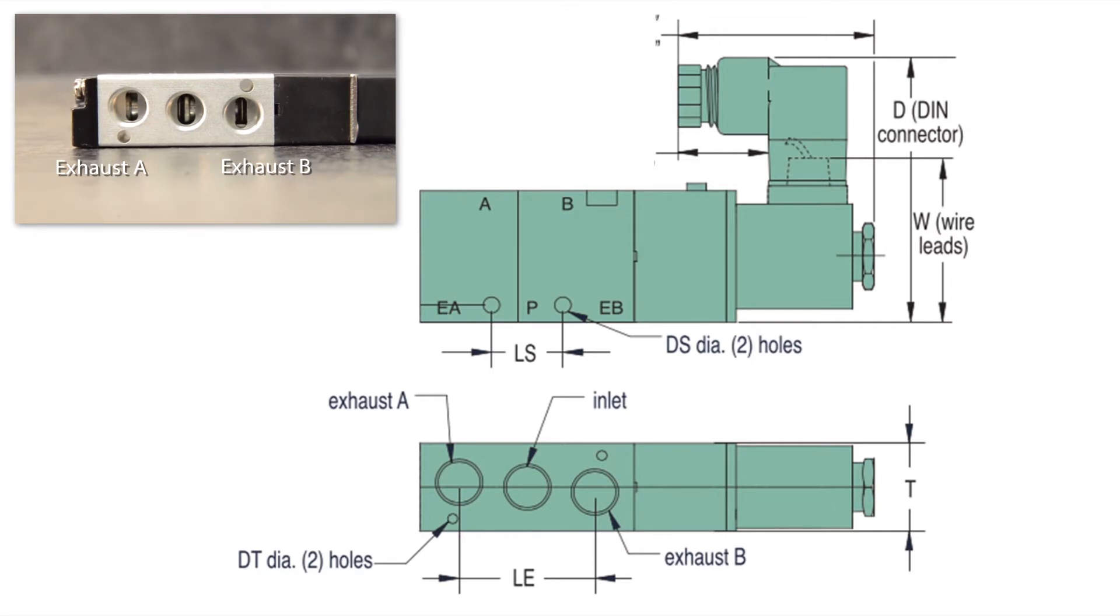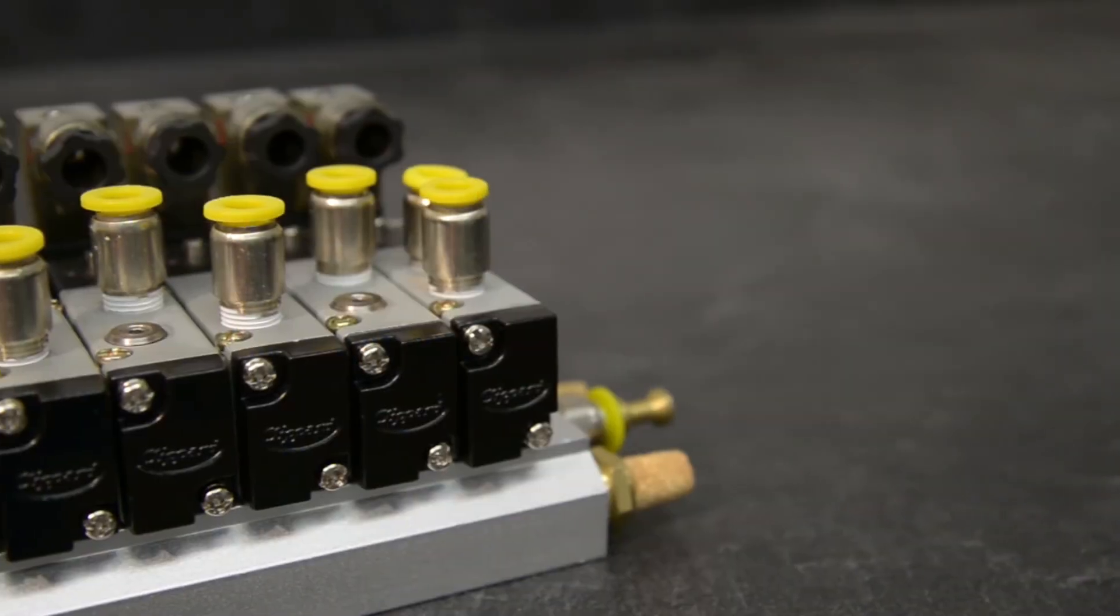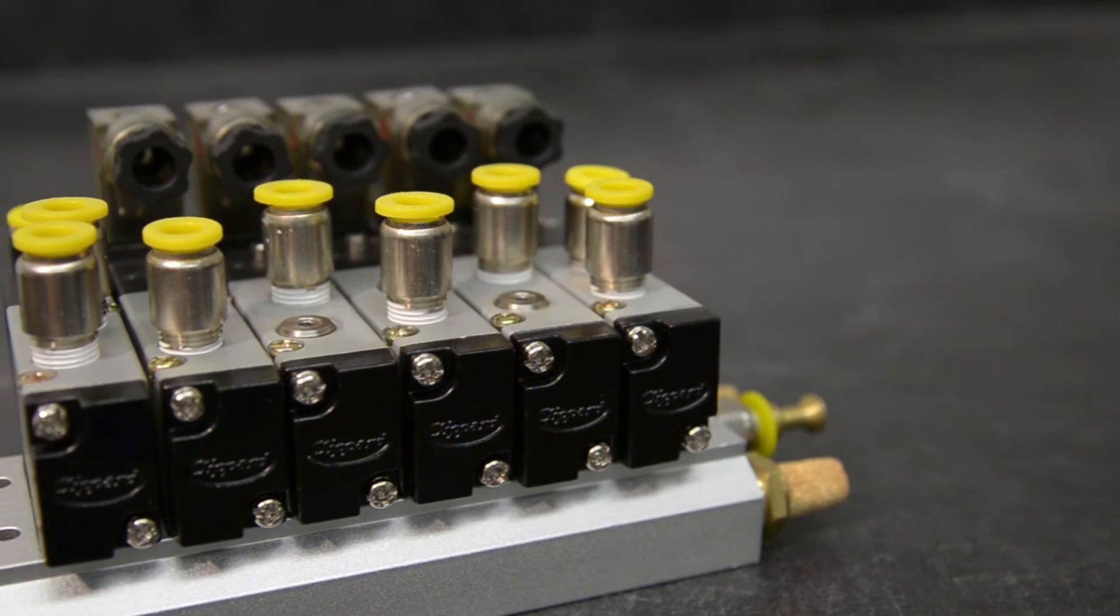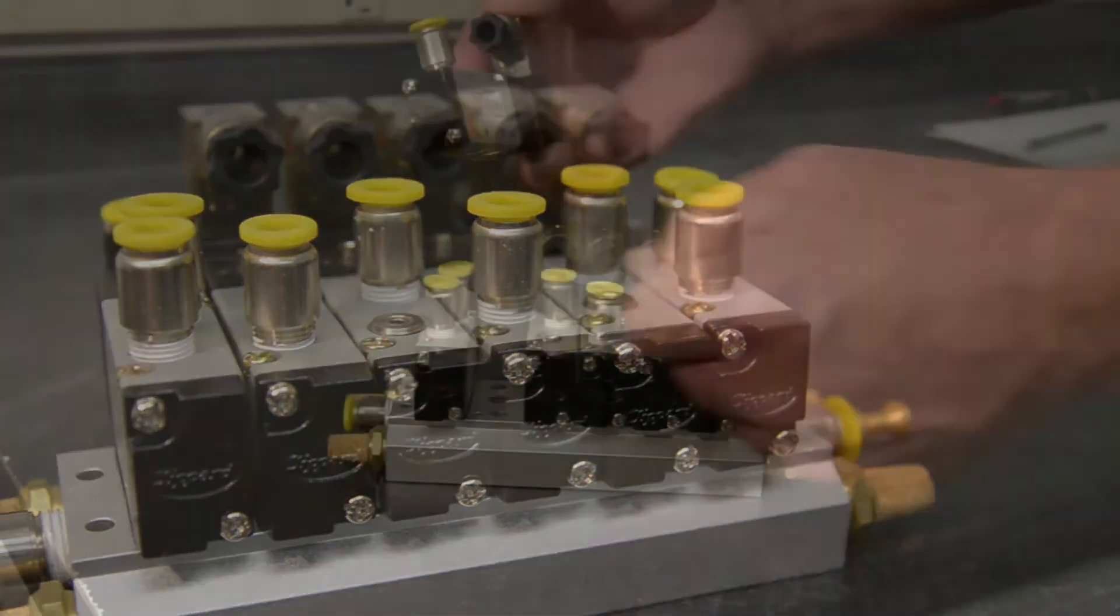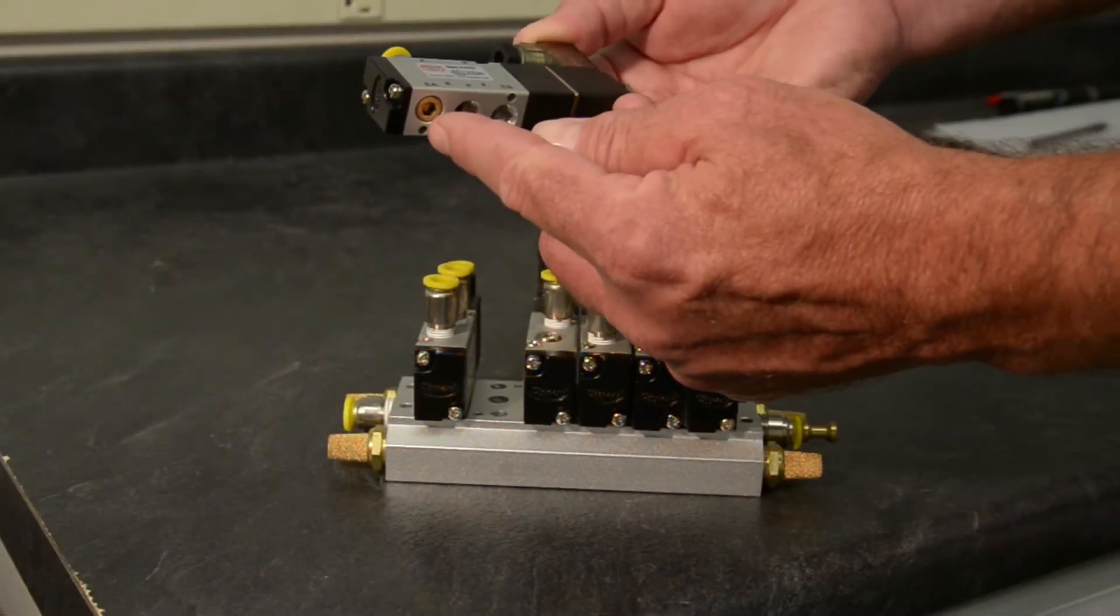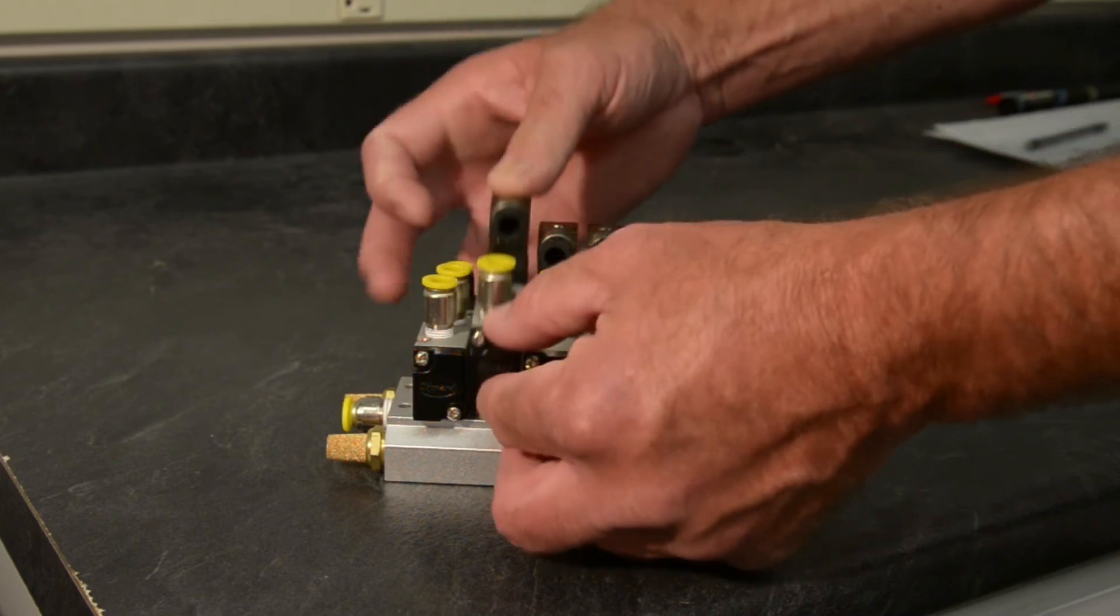When the valves are mounted on a common manifold, the supply port P is between both exhaust ports, while your A and B outputs are located on the top of the valve. It is important to remember that we are going to mount the valves on a manifold. It is essential to use flush plugs on the exhaust ports which will be facing the manifold in order to get a good seal.